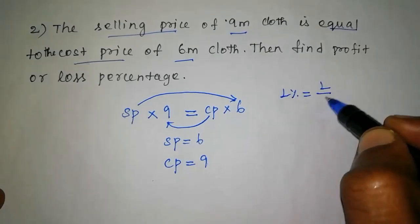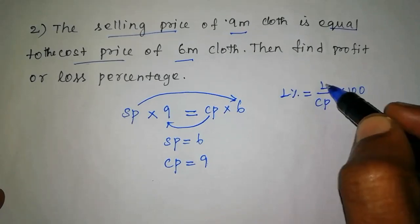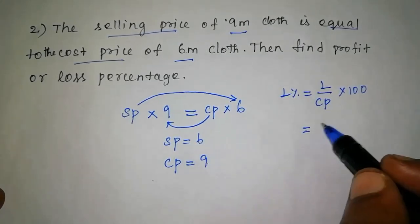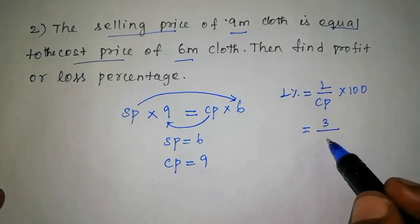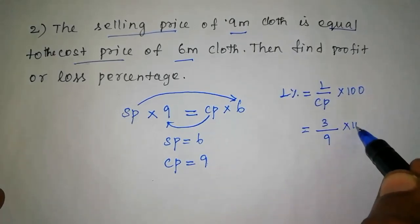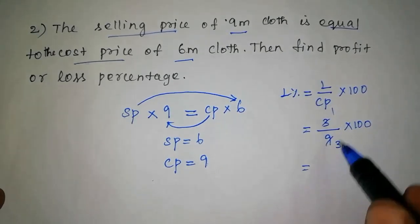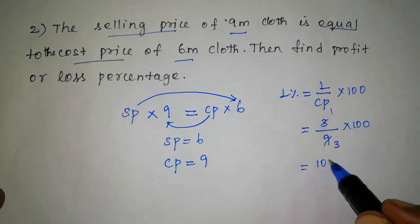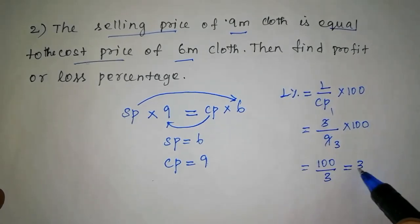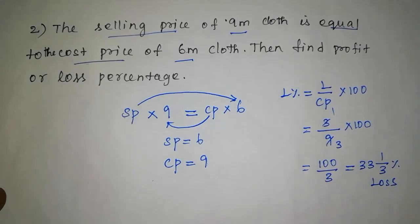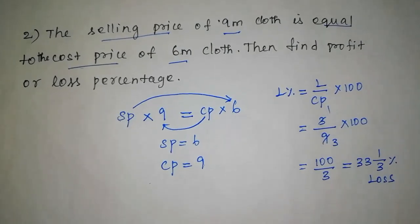Loss percent is equal to loss divided by cost price, into 100. If you get the cost price of 100, this is 100. So if you cancel, 100 by 300 is 33. So the answer is 33 and one-third percent. This is model 1. This is model 2.